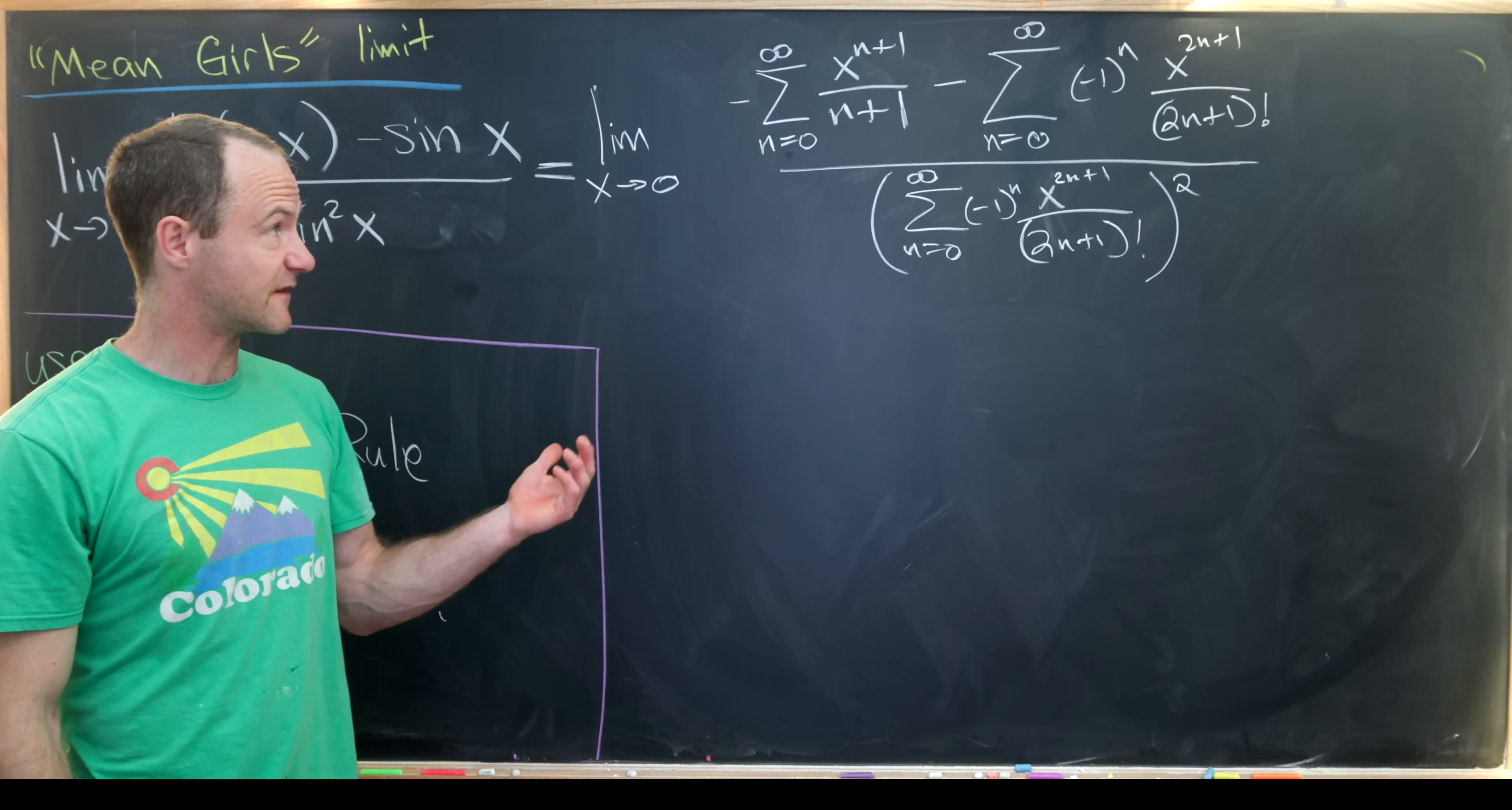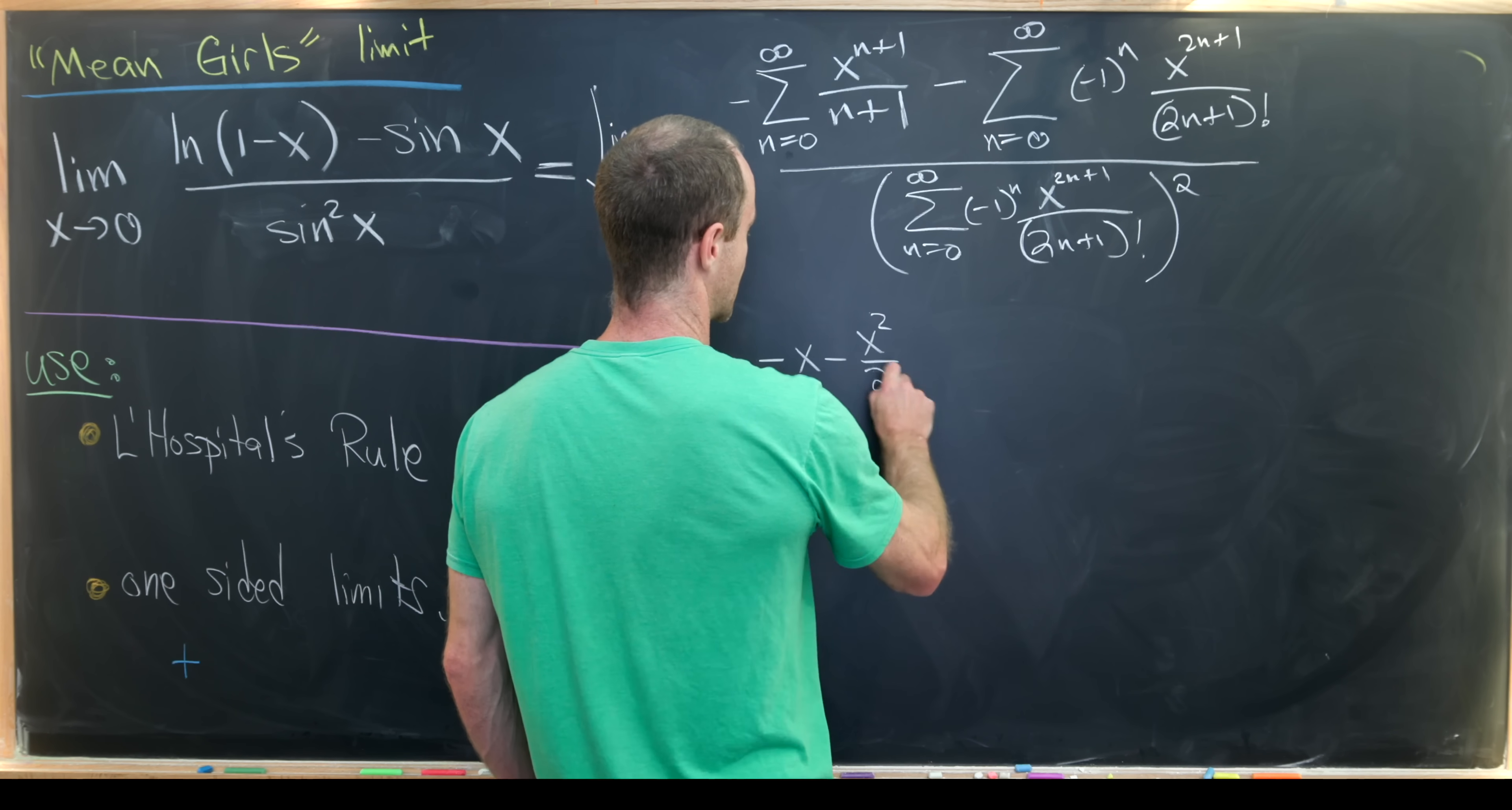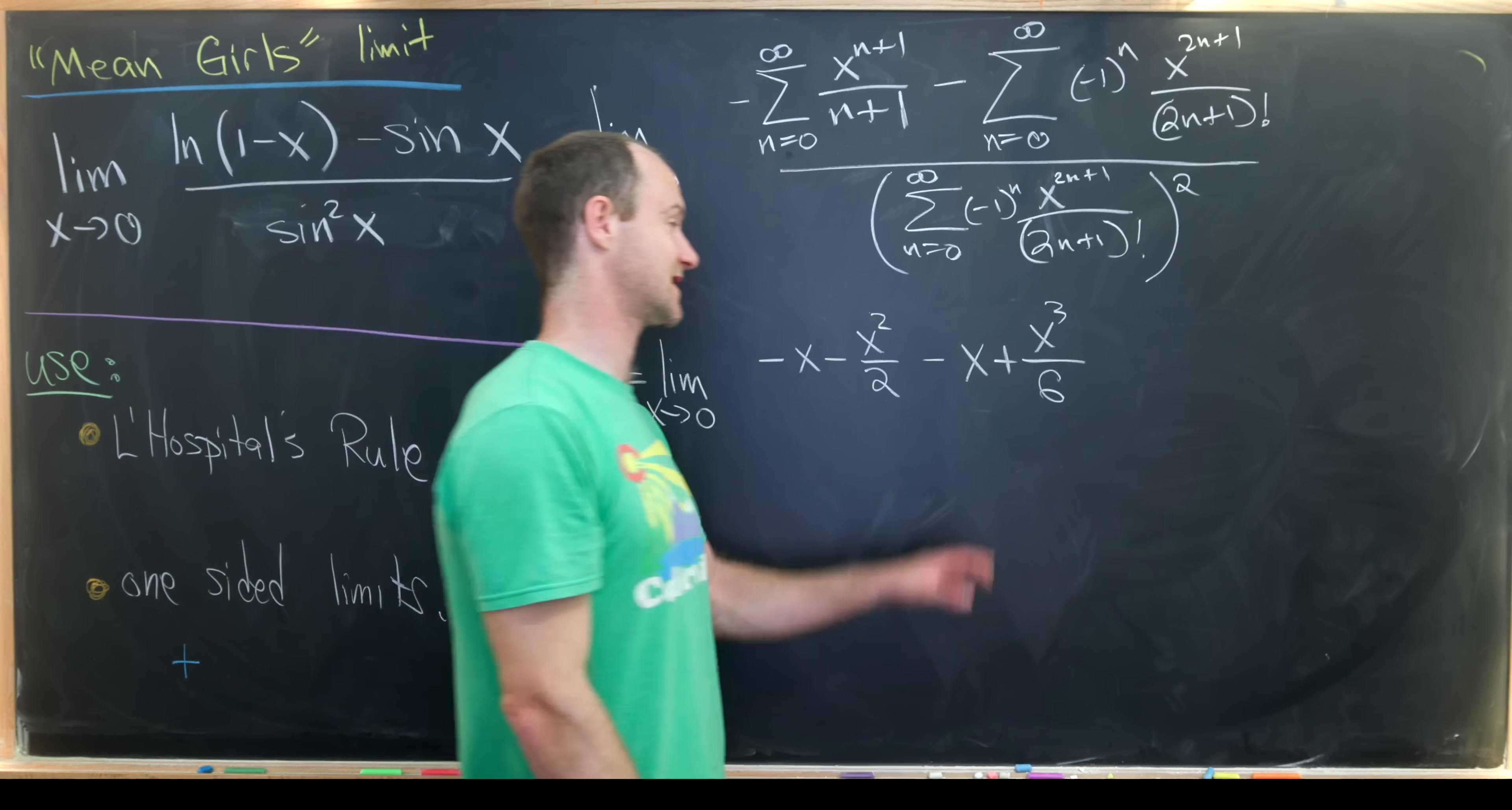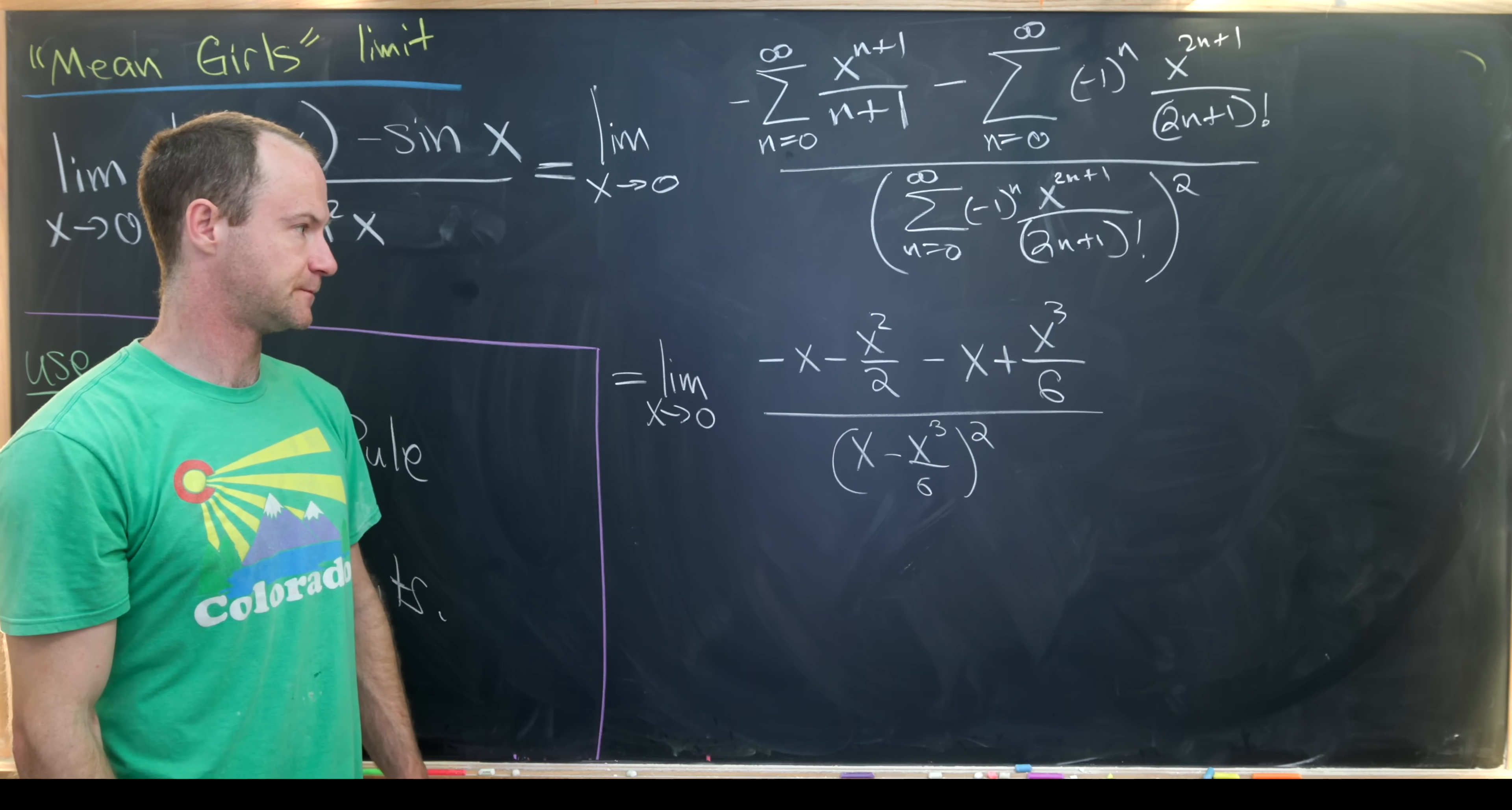And now here's where we're going to start playing it fast and loose. We're just going to take the first two terms from all of these expansions. So we've got the limit as x goes to 0 of negative x minus x squared over 2, the first two terms from that expansion, and then we'll have minus x plus x cubed over 3 factorial, which is 6. And then downstairs, we'll have x minus x cubed over 6 quantity squared, the first two terms there.